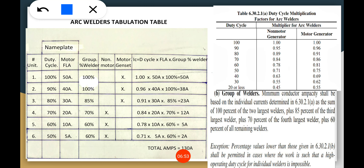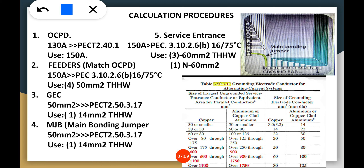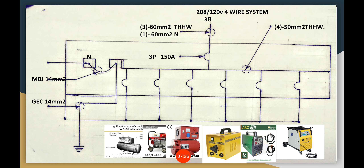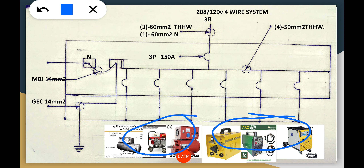For the OCPD, we take the 130-ampere total and go to PEC 240.16. We don't multiply by 200% here — that 200% applies only to individual arc welding machines, not to a group of welders. For the group welder, we simply go to PEC 240.16 and use 150 amperes as the OCPD.